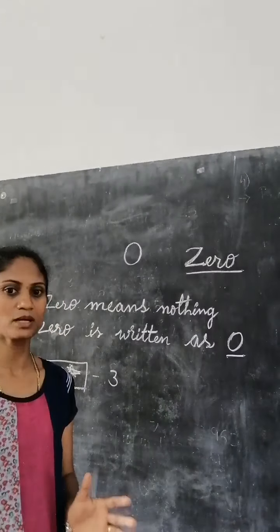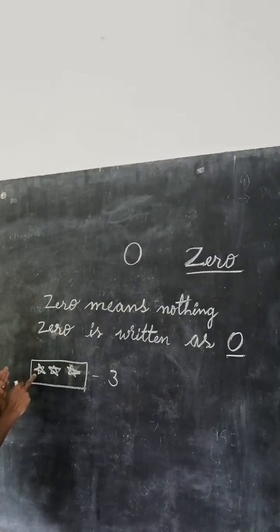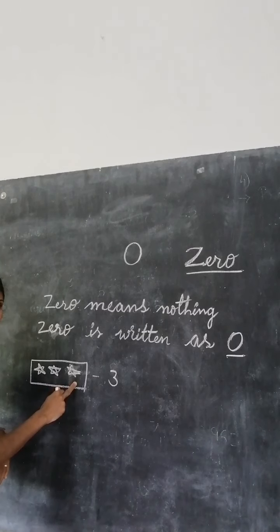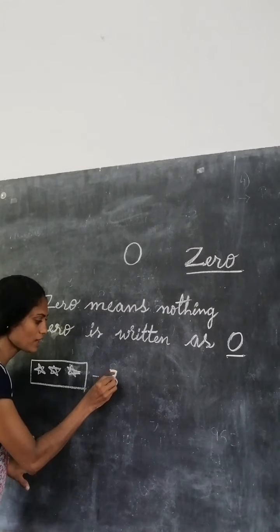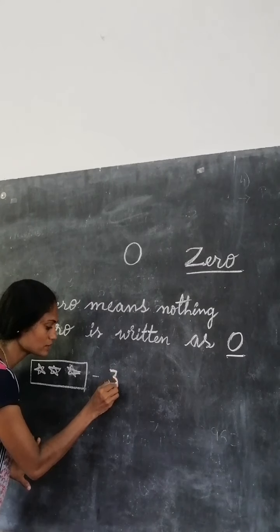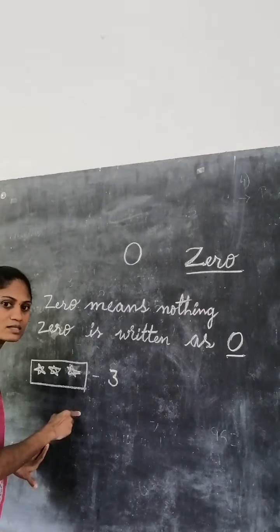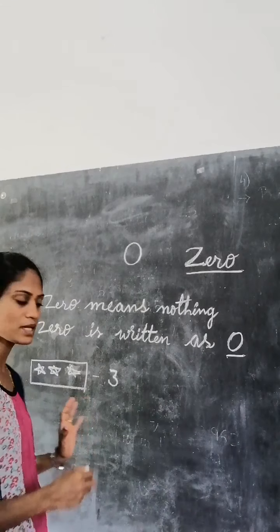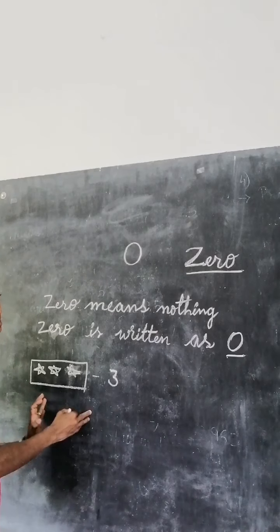Now let's see how it becomes zero. Here: one, two, three. How many stars are there? Three. There are three stars. Three stars.